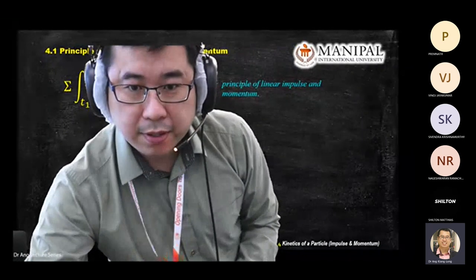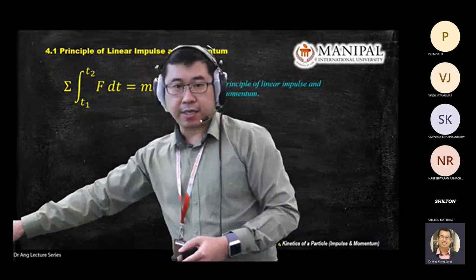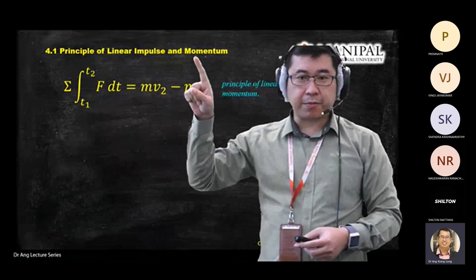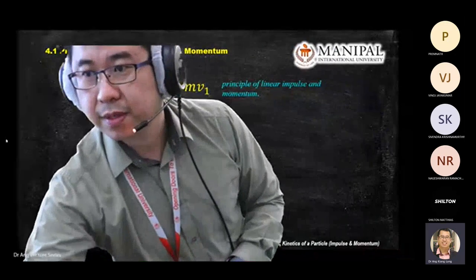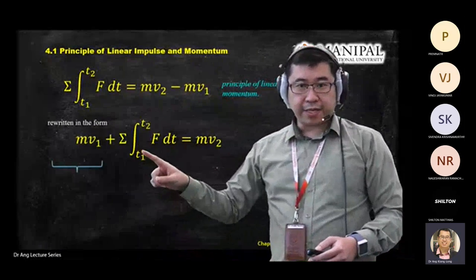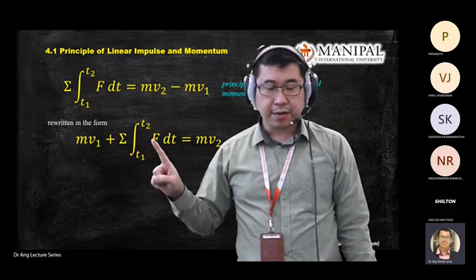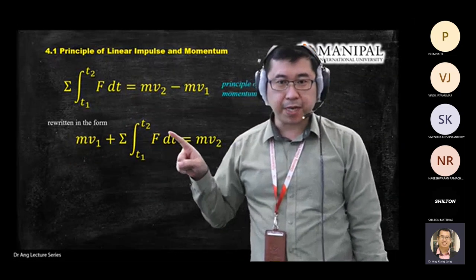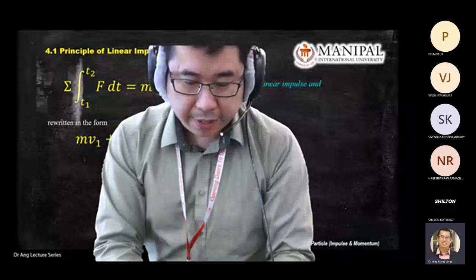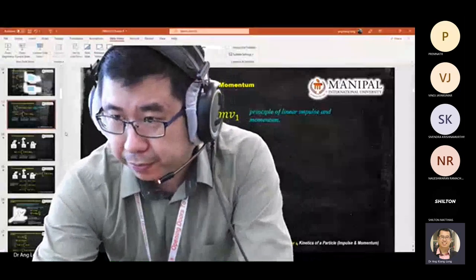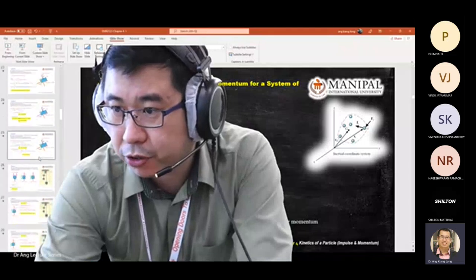Before this, we have covered the principle of linear impulse and momentum. We arrived at this equation: MV momentum plus impulse — impulse is force multiplied by time — equal to momentum after. We have gone through three examples: a crane system, then a scenario with smooth surface and with friction, and one scenario with a pulley system.